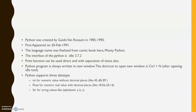Integer can accept values without any decimal places, like 45, 68, 89 — direct whole number values. Float values are accepted with decimal places; the value is numeric but with decimals, like 18.56 or 65.14. String can accept alphabetical values like a, b, c. String values are always written in single or double quotes, while integer and float values do not need quotes.